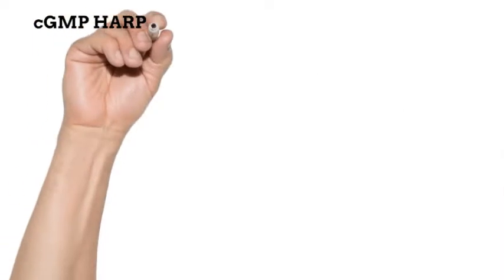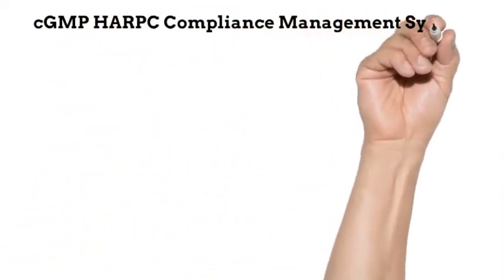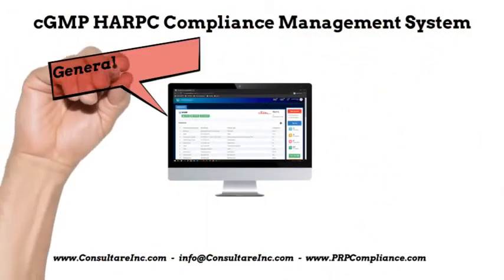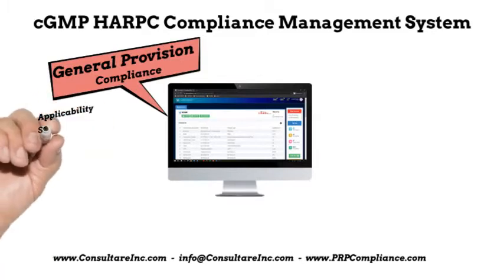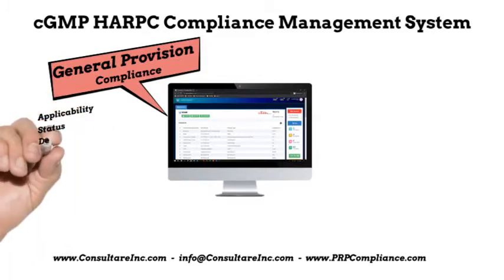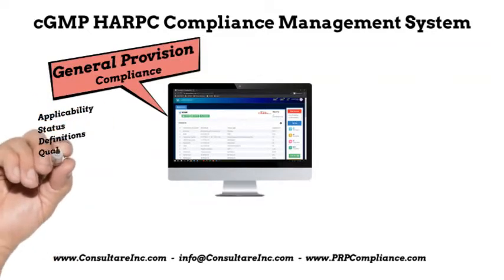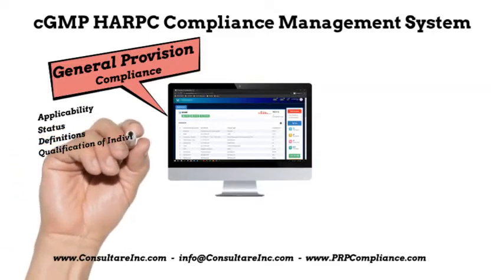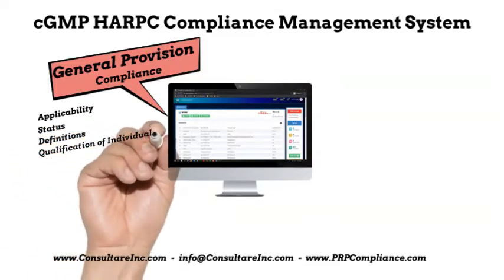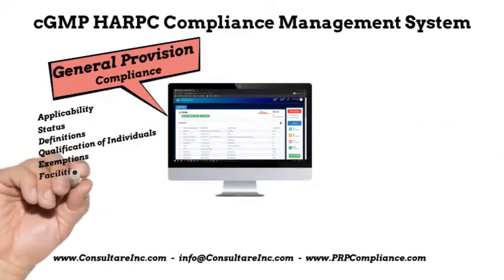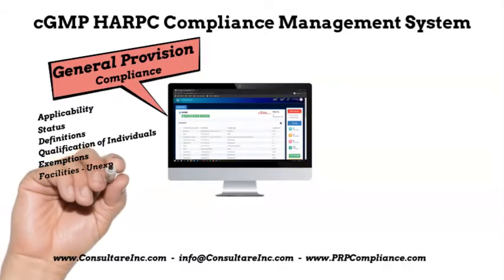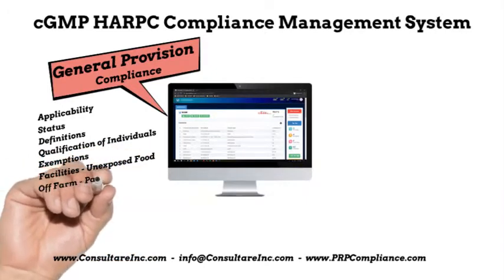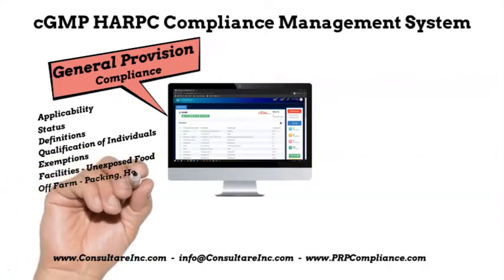The CGMP-HARPC Compliance Management System tracks compliance for the general provisions of applicability and status, definitions, qualifications of individuals who manufacture, process, pack, or hold food, exemptions, facilities solely engaged in the storage of unexposed packaged food, off-farm packing and holding of raw agricultural commodities, and records requirements.